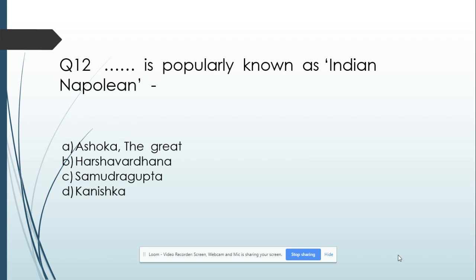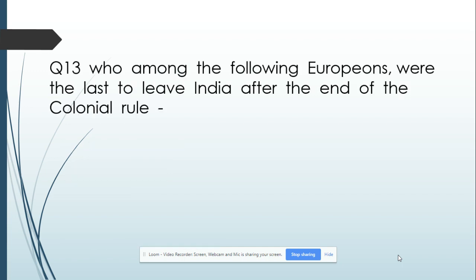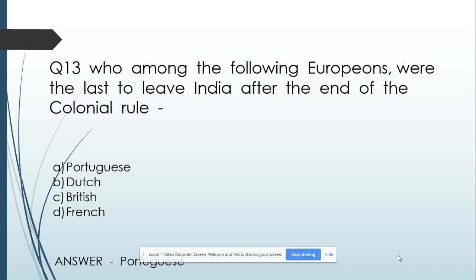Question number 12: Who is popularly known as the 'Indian Napoleon'? Option A: Ashoka the Great. Option B: Harsha Vardhana. Option C: Samudragupta. Option D: Kanishka. And its answer is Samudragupta. Question number 13: Who among the following Europeans were the last to leave India after the end of colonial rule? Option A: Portuguese. Option B: Dutch. Option C: British. Option D: French.